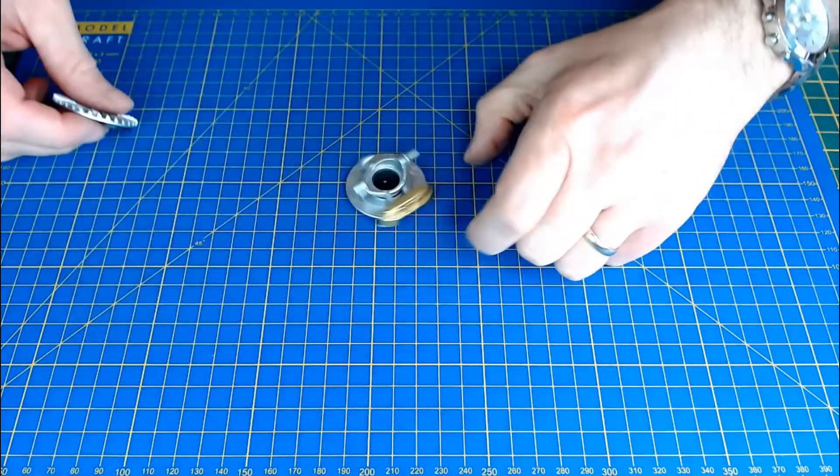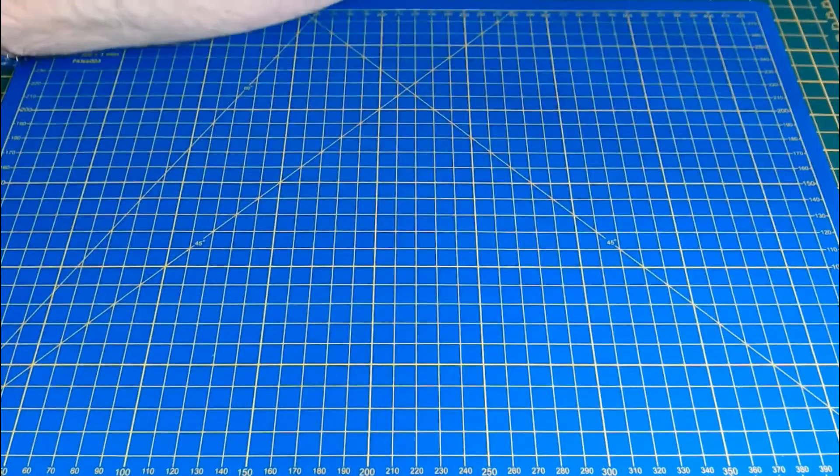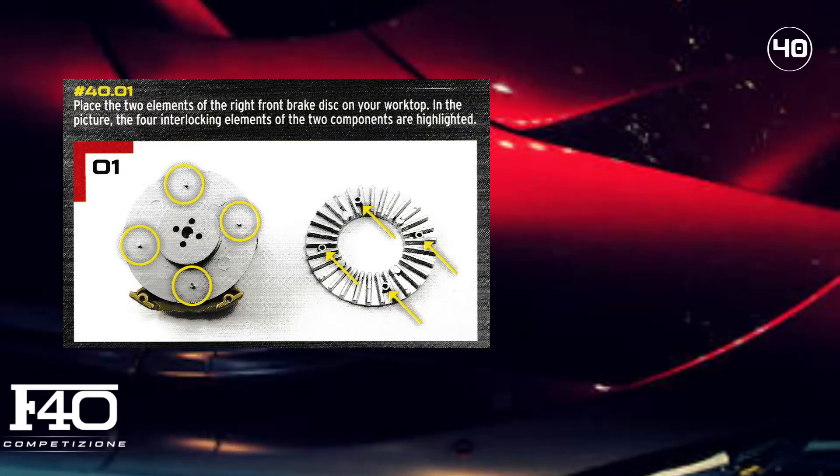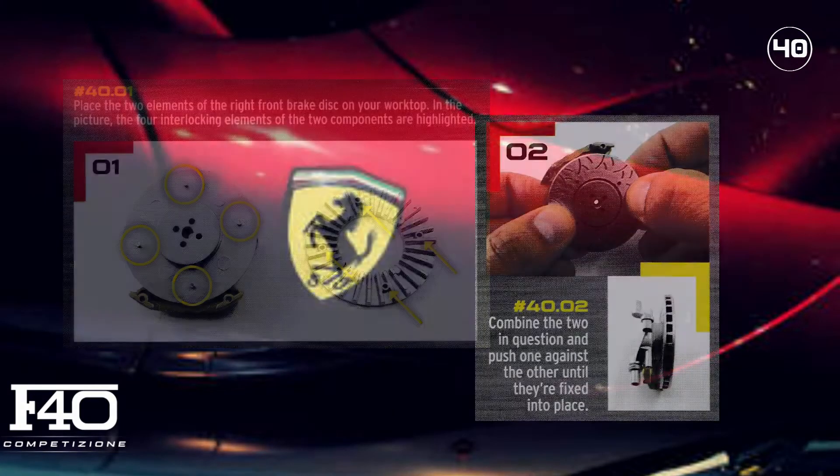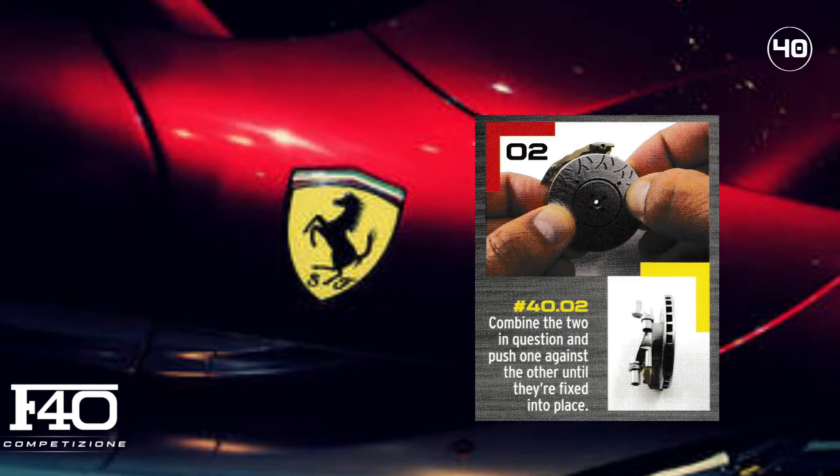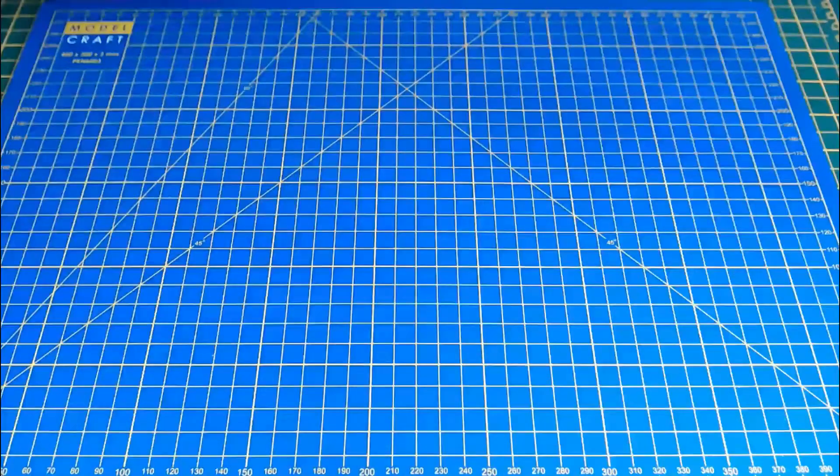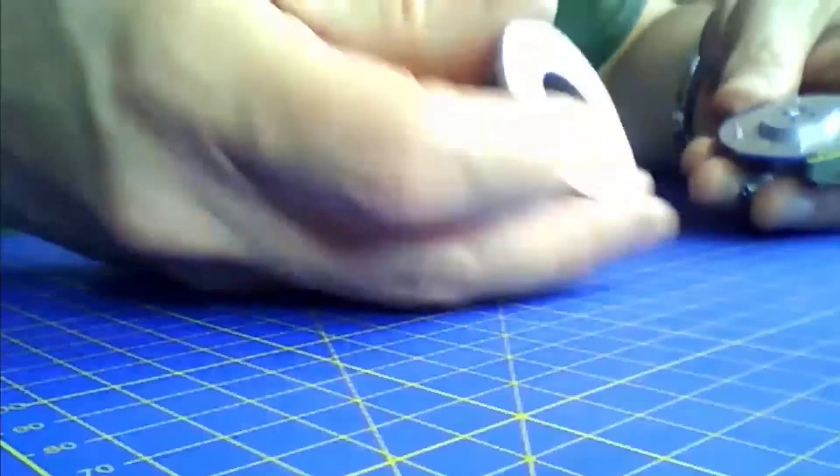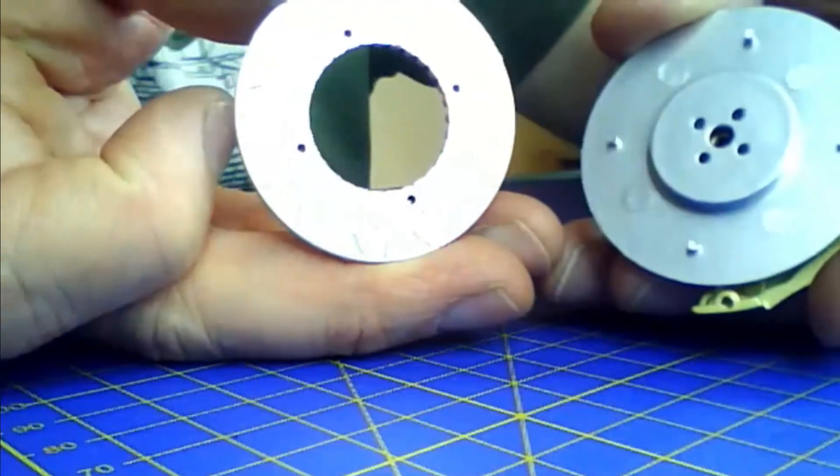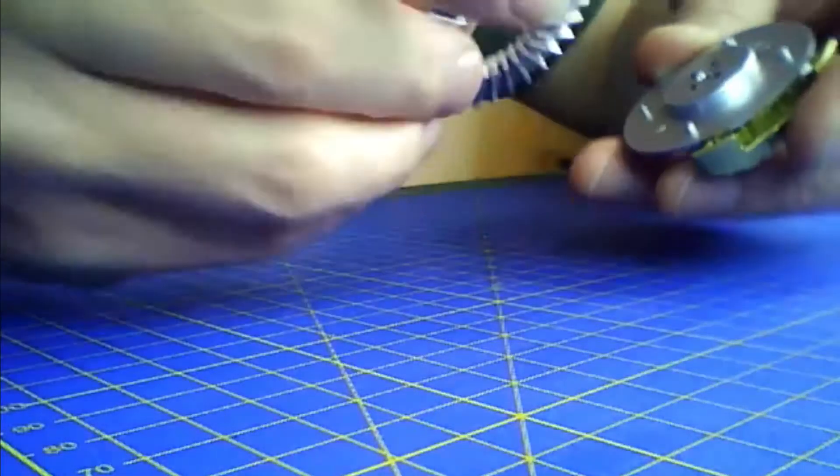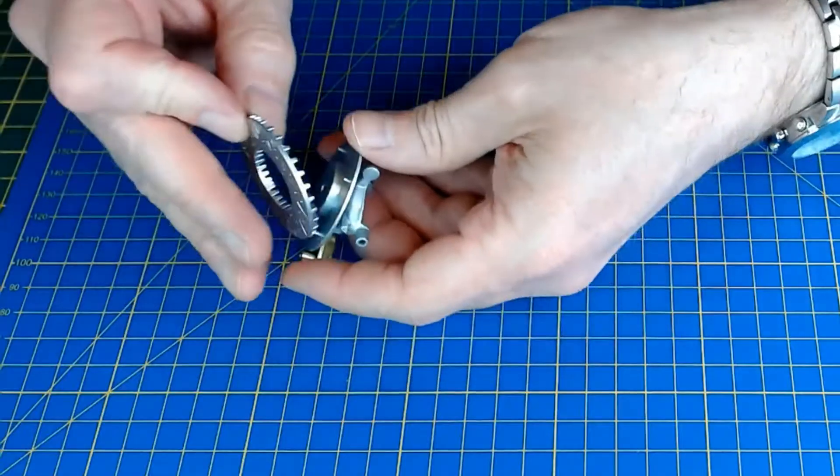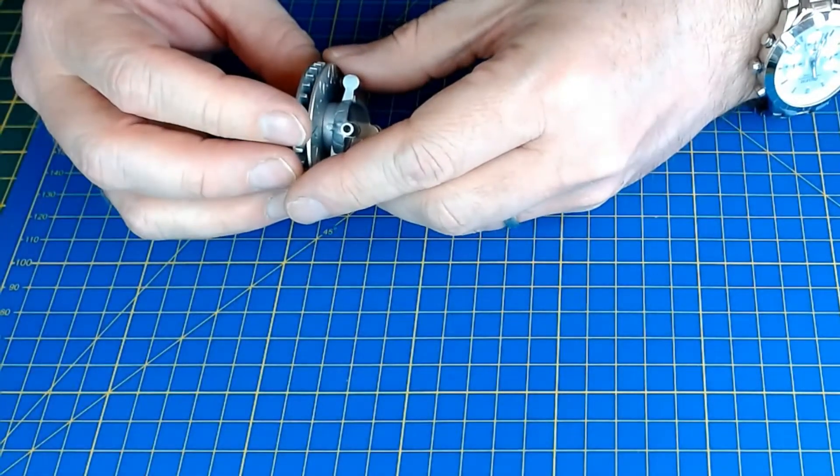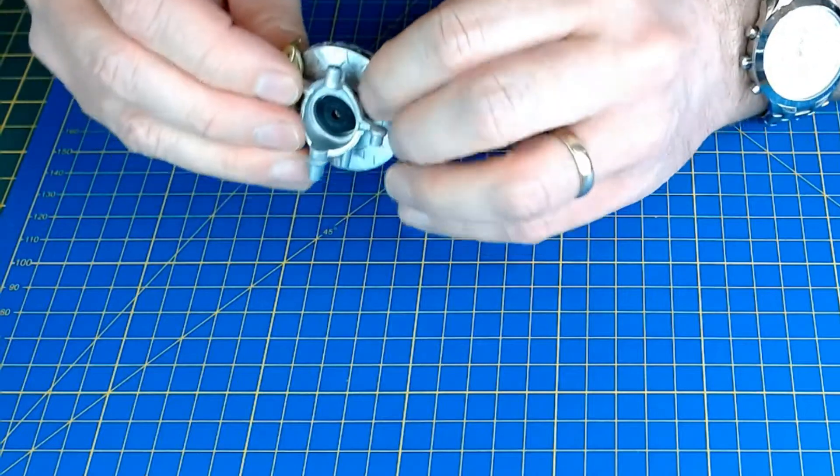First thing we're doing is identify the pins - pins on that one and that one. We're just going to attach them, marry them up and press them in. So you've got this ventilated disc look.